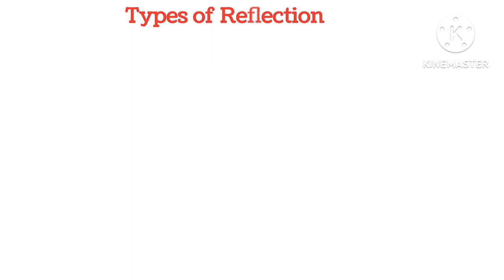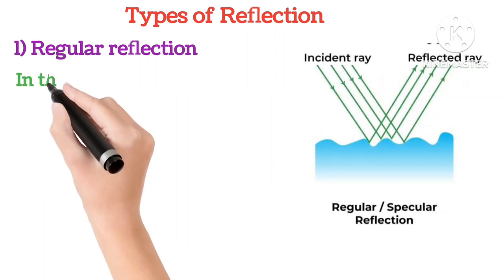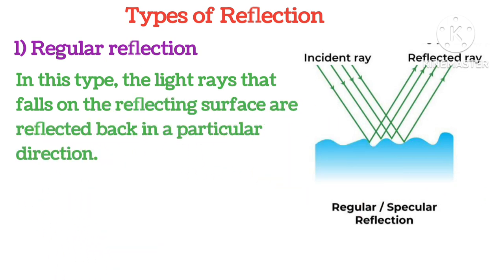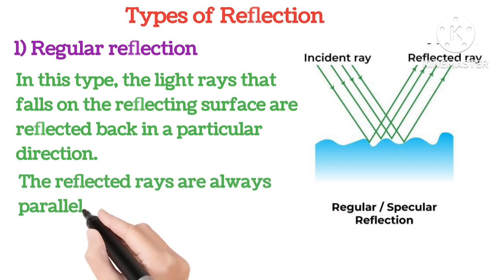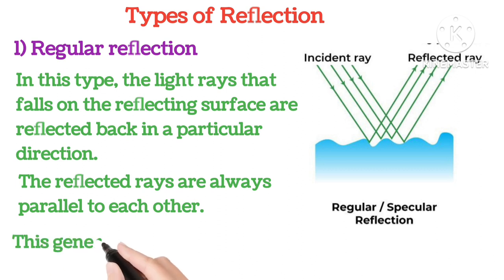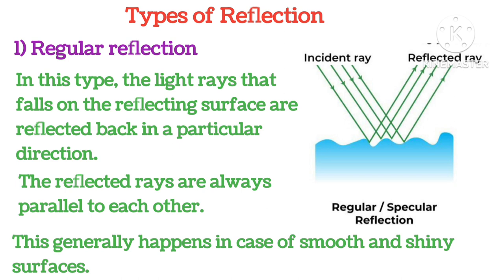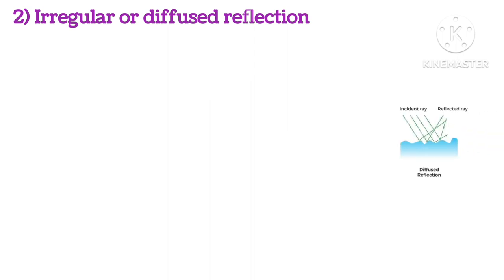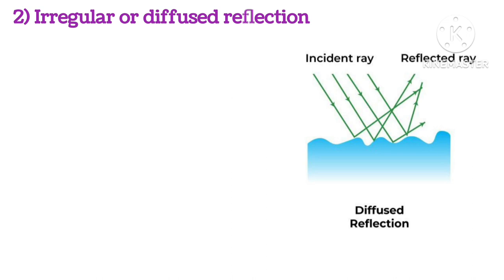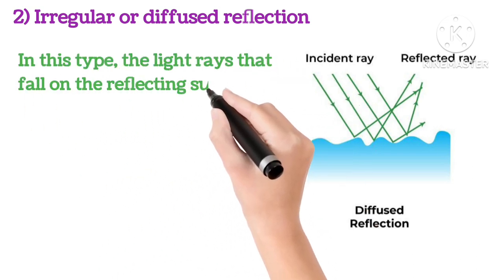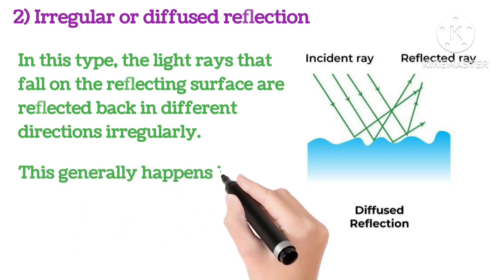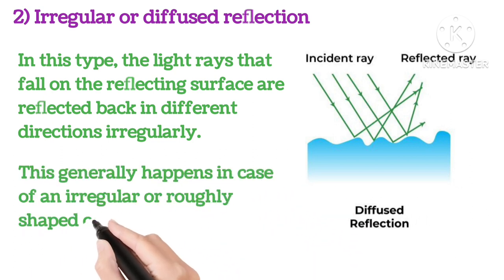Types of reflection. Regular reflection: in this type of reflection, the light rays that fall on the reflecting surface are reflected back in a particular direction. The reflected rays are always parallel to each other. This generally happens in case of smooth and shiny surfaces. Irregular or diffuse reflection: in this type of reflection, the light rays that fall on the reflecting surface are reflected back in different directions irregularly. This generally happens in case of irregular or rough-shaped objects.